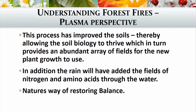This process has improved the soils, because now you've got those GANSes available to your plant. It allows the soil biology to start thriving, which in turn provides an abundant array of fields for new plant growth to use, because you've got this huge array of different materials in your soil that have all been GANSed and can provide those fields. In addition, we also have the added fields of nitrogen and amino acids coming through the rainwater, which all add to the growth of the plants. Essentially, it's another way nature restores balance through fire, and that's why we get huge growth in forests where fire has gone through.